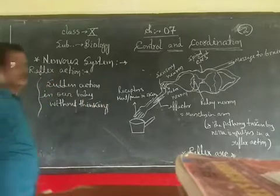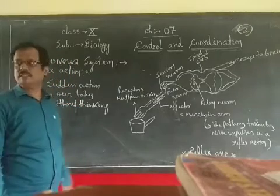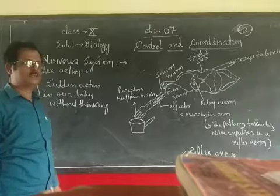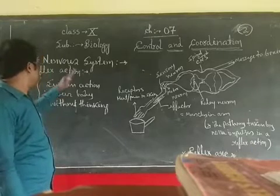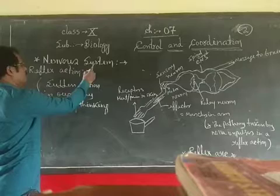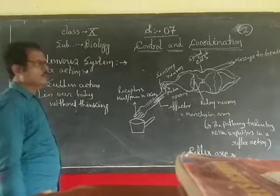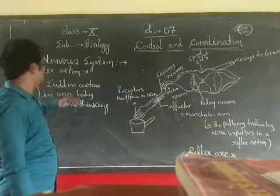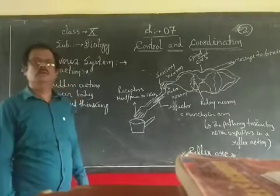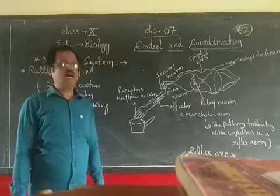In our body, for control and coordination, three organs are involved: brain, spinal cord, and peripheral nerves. But reflex action is an exception among all organs — it is like emergency work. Reflex action is a sudden action, and it happens very fast.